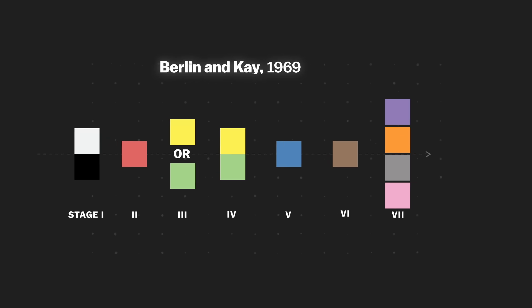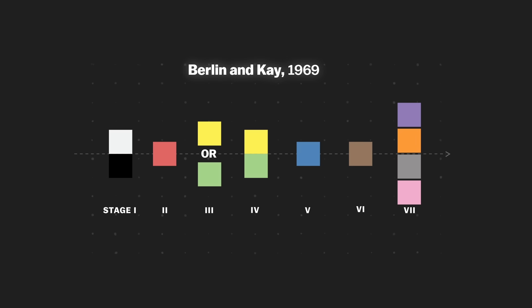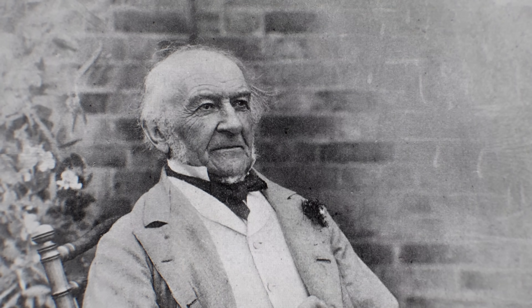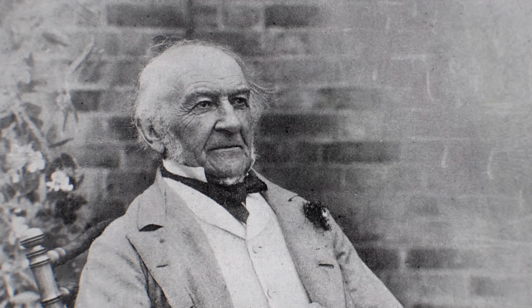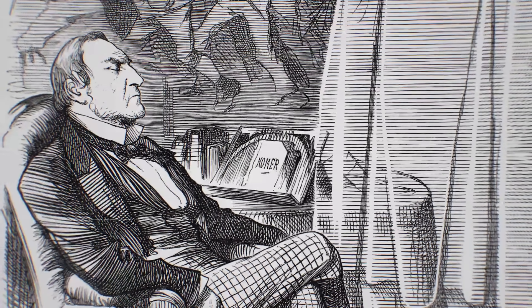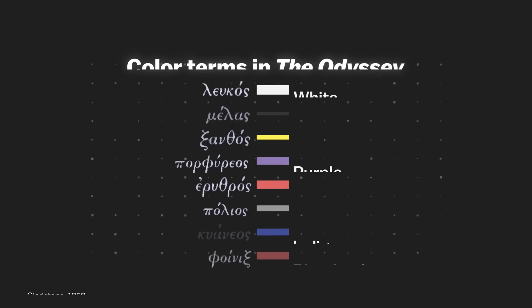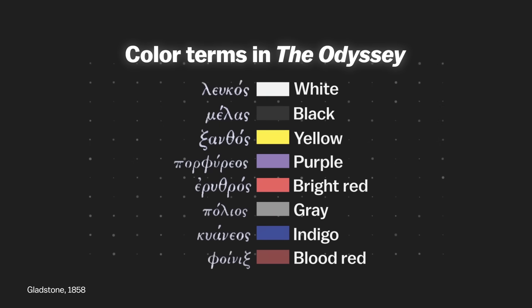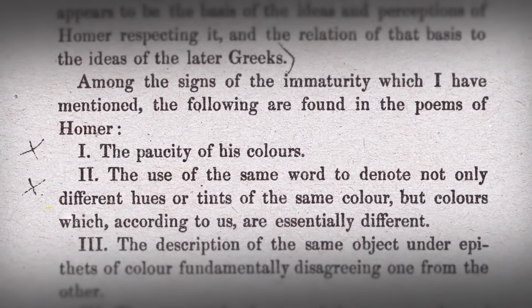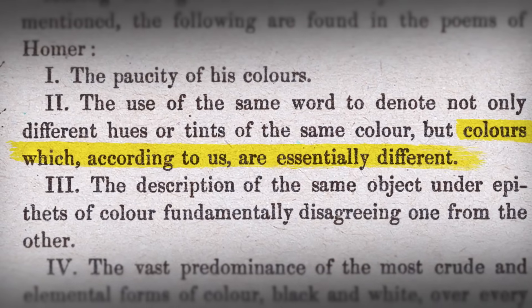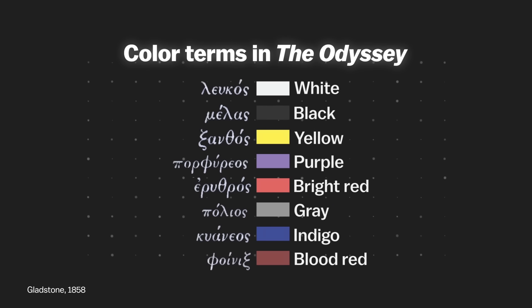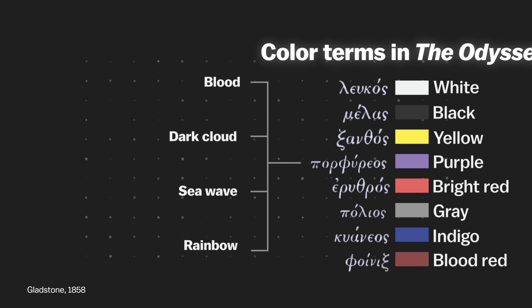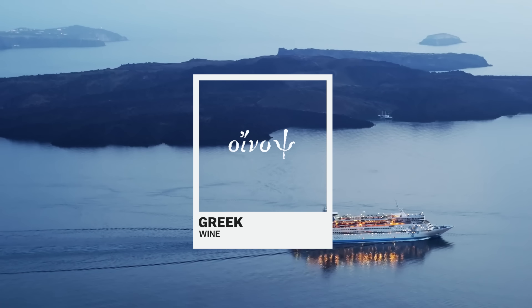The theory was revolutionary. They weren't the first researchers interested in the question of how we name colors. In 1858, William Gladstone — who would later become a four-term British prime minister — published a book on the ancient Greek works of Homer. He was struck by the fact that there weren't many colors in the text, and when there were, Homer would use the same word for colors which, according to us, are essentially different. He used the same word for purple to describe blood, a dark cloud, a wave, and a rainbow, and he referred to the sea as wine-looking.